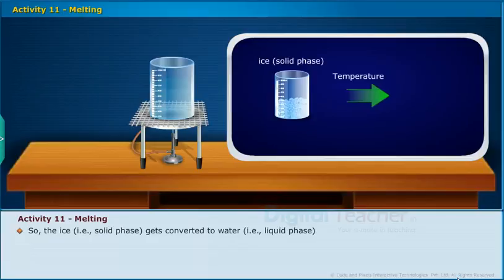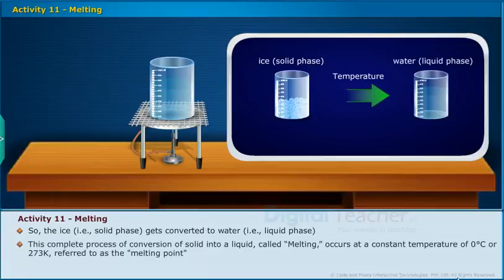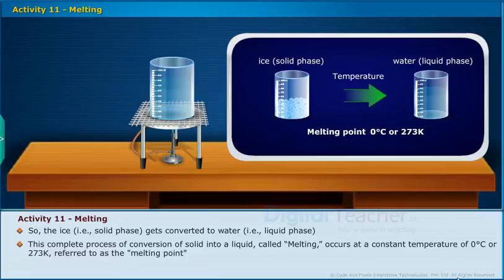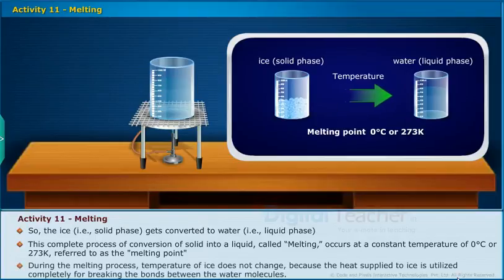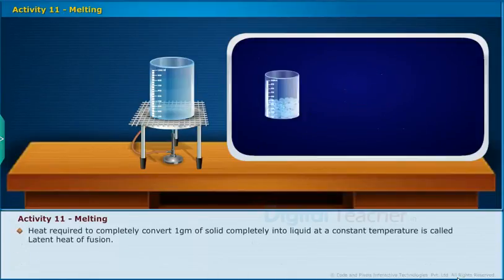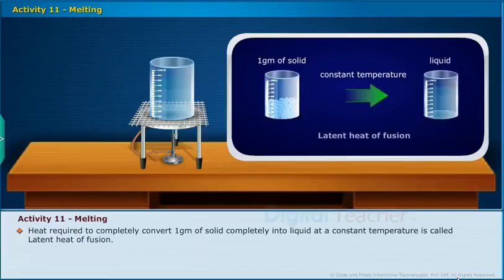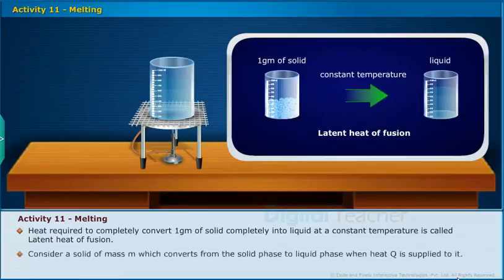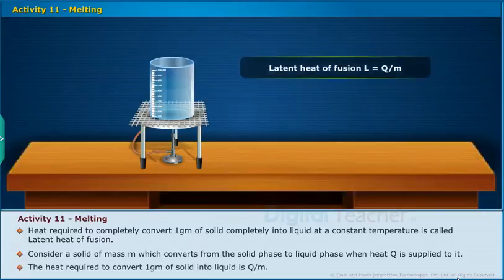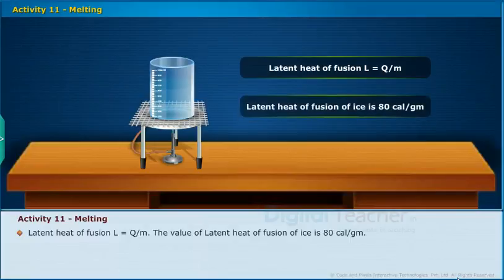The ice (solid phase) gets converted to water (liquid phase). This complete process of conversion of solid into liquid — called melting — occurs at a constant temperature of 0°C or 273 K, referred to as the melting point. During the melting process, the temperature of ice does not change because the heat supplied is utilized completely for breaking the bonds between the water molecules. The heat required to completely convert one gram of solid into liquid at constant temperature is called latent heat of fusion. For a solid of mass M which converts from solid to liquid when heat Q is supplied, latent heat of fusion L = Q/M. The value of latent heat of fusion of ice is 80 calories per gram.